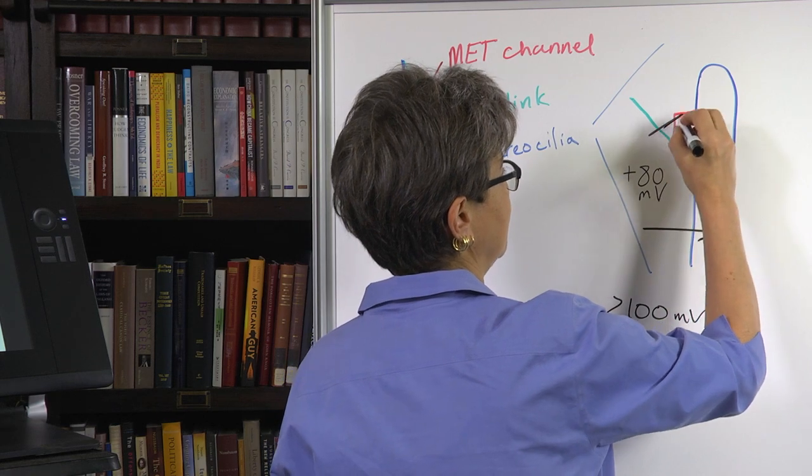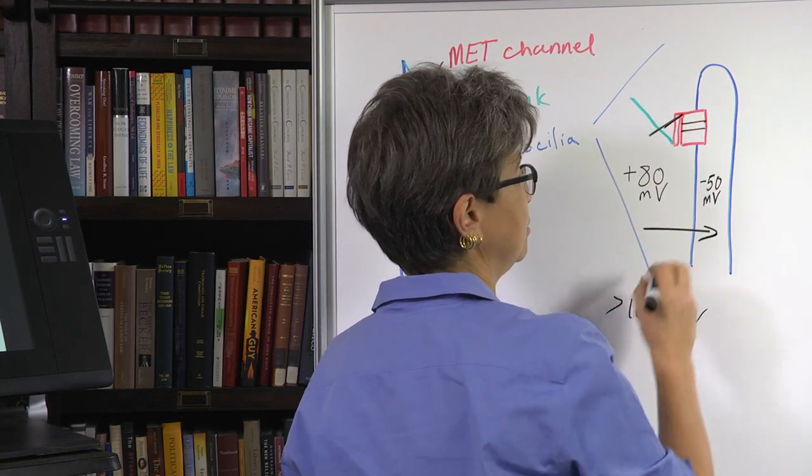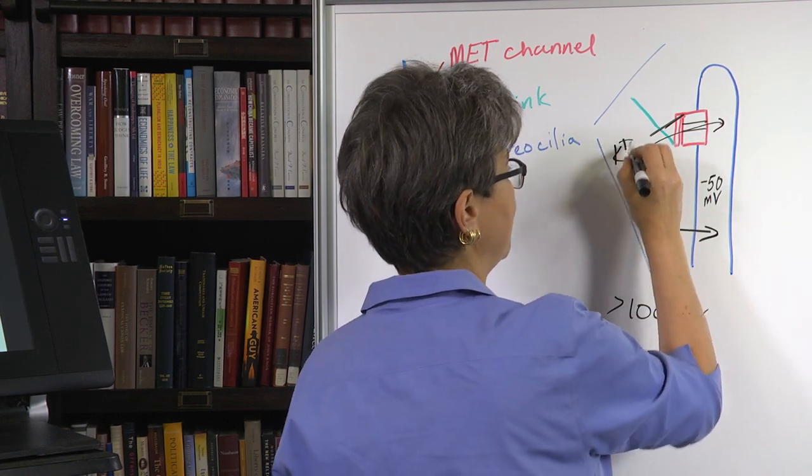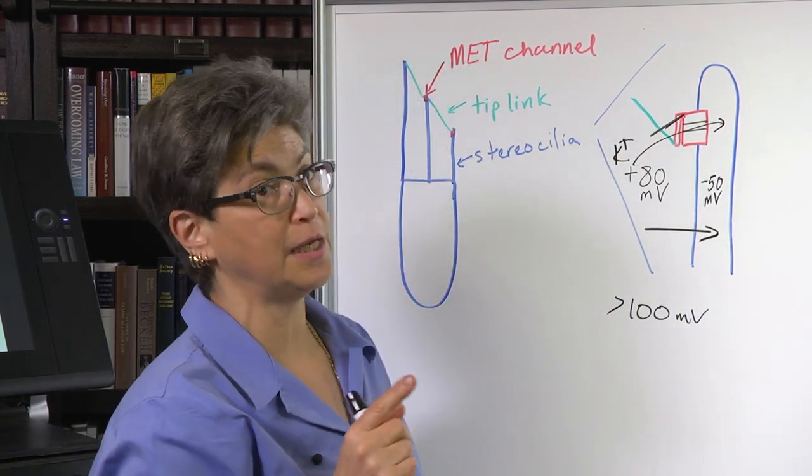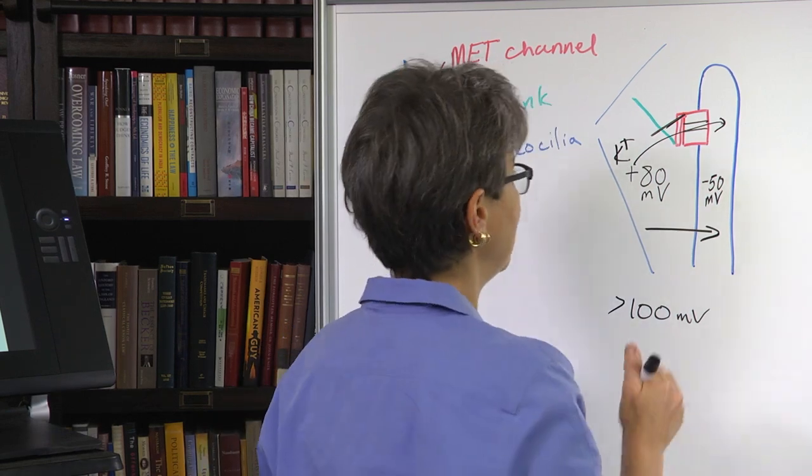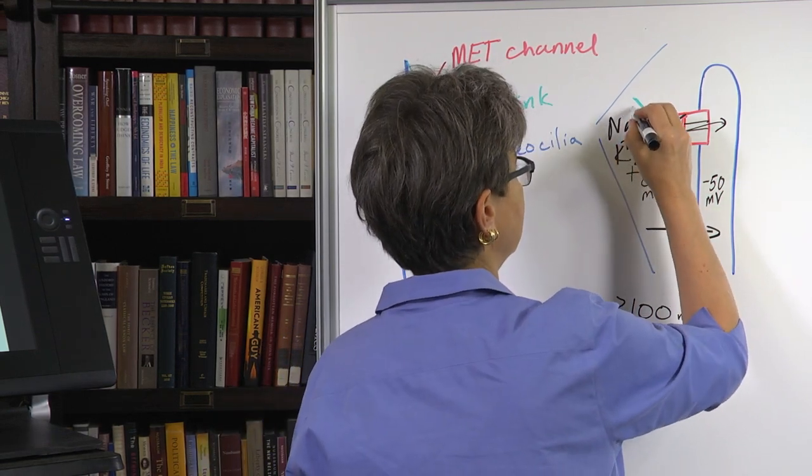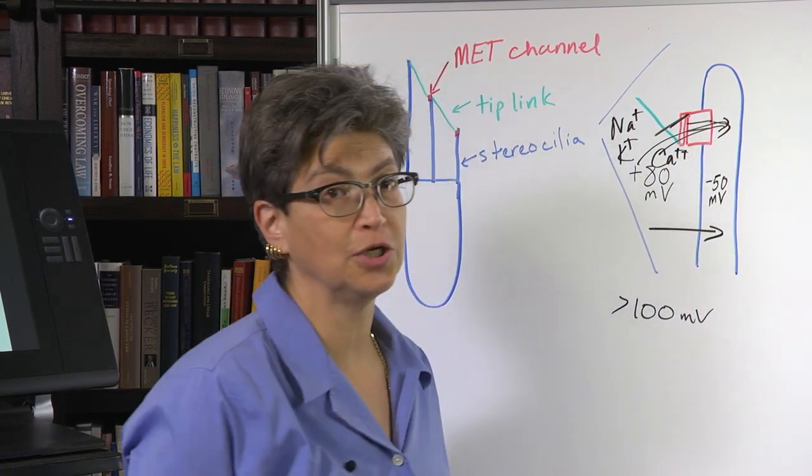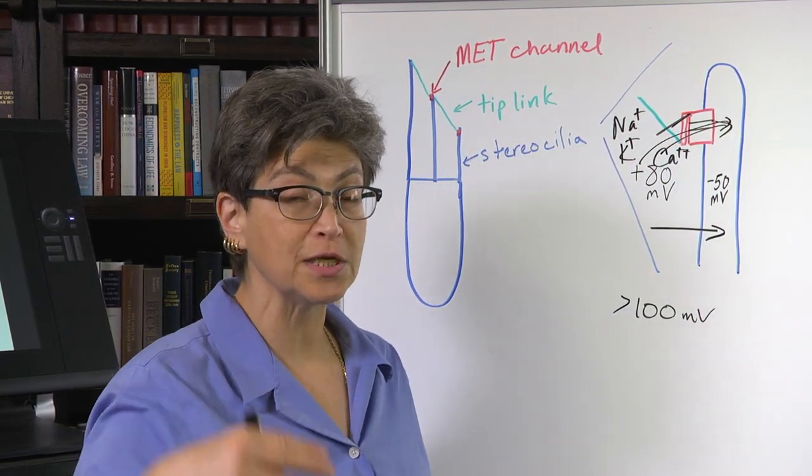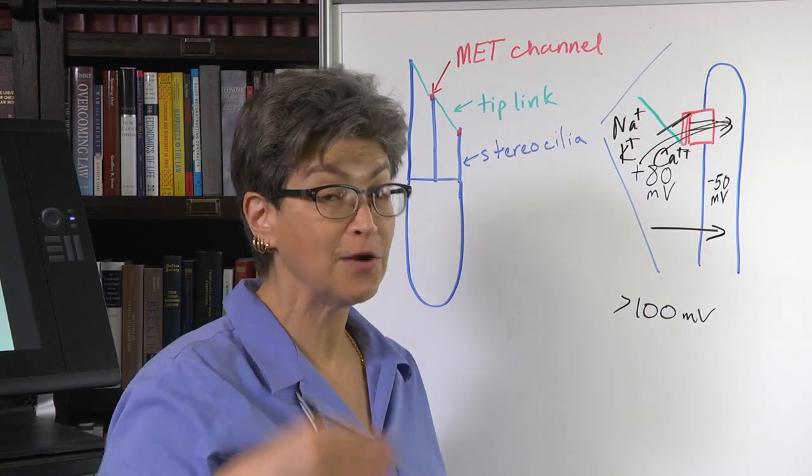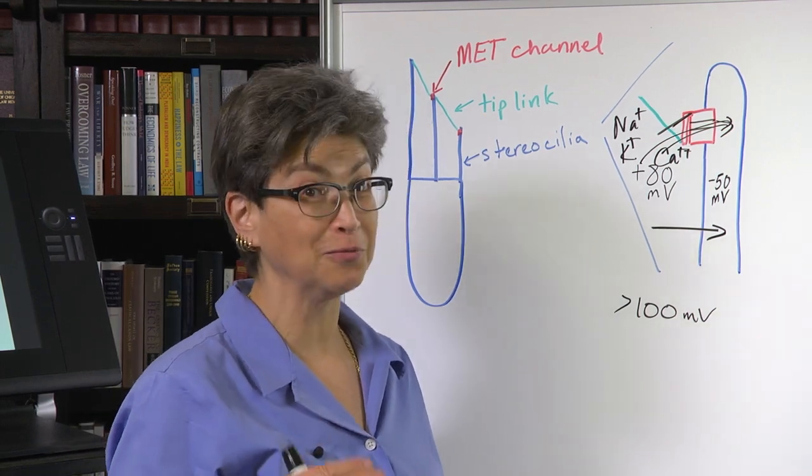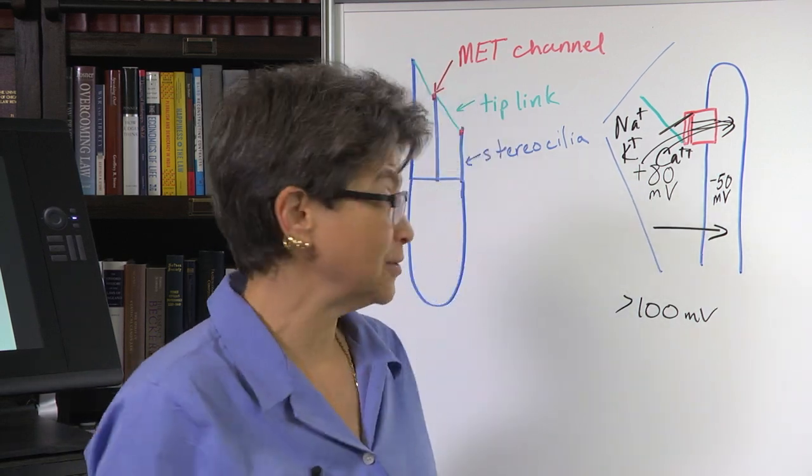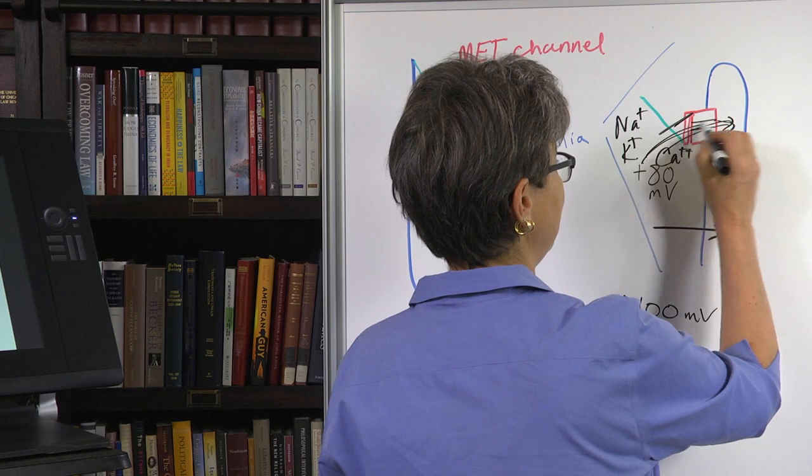So that means that once this lid comes off and the channel is open, potassium—remember that this endolymph is weird because it has high levels of potassium—potassium, sodium, and calcium as it turns out are all going to flow through this cation channel. The result is going to be a very quick response. Sound is quick. When we're talking about hearing up to 20 kilohertz, the stimulus is very quick.